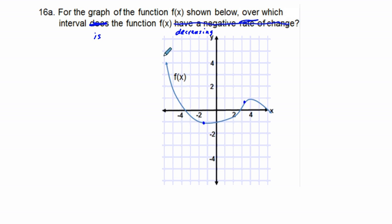So we are decreasing all the way down to about here, where x is equal to negative 1. So that's kind of a critical number. Then we are increasing all the way from x equals negative 1 to about where x equals 4. So from 4 on, we're going to be decreasing.